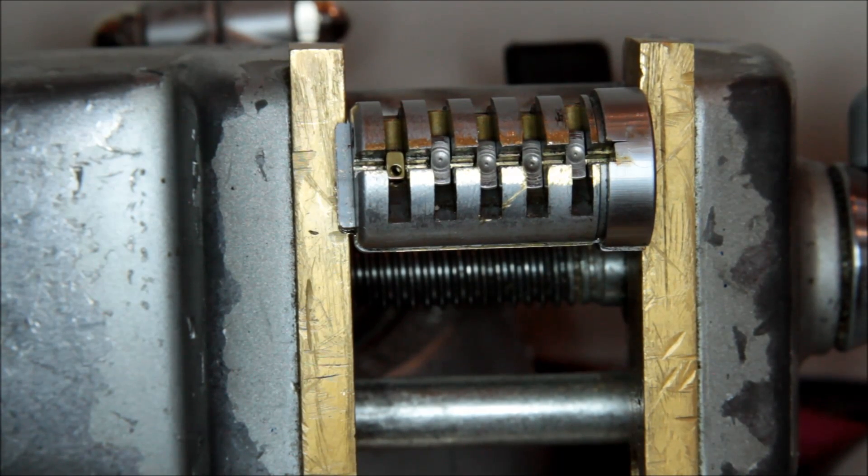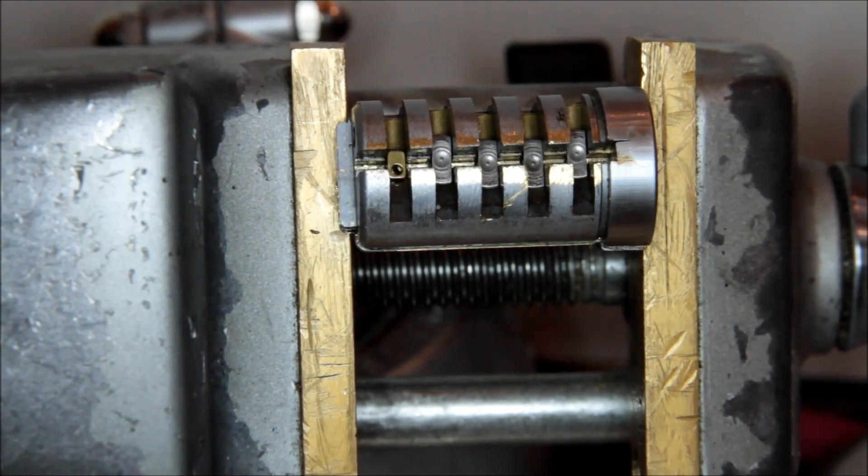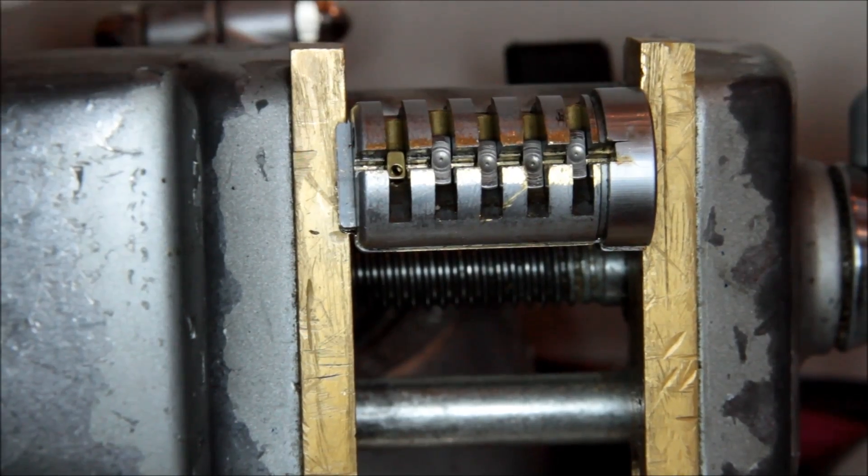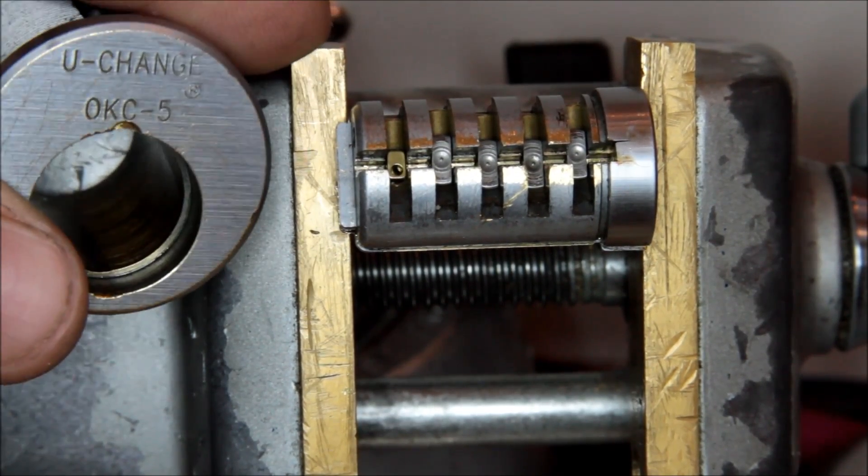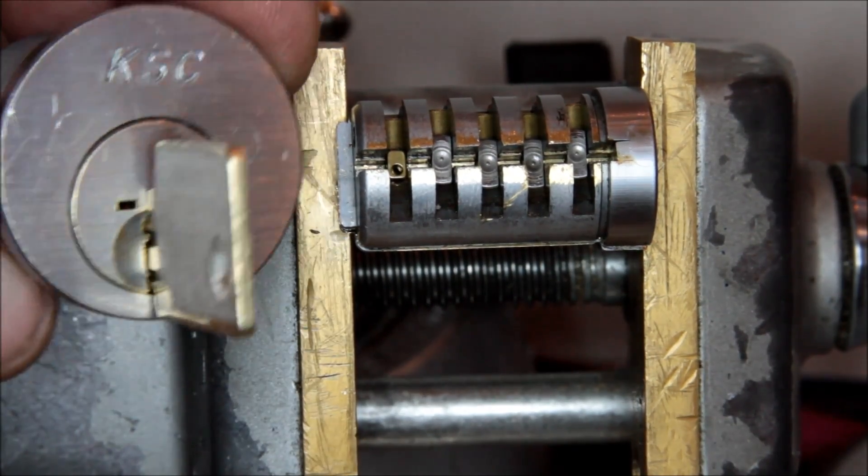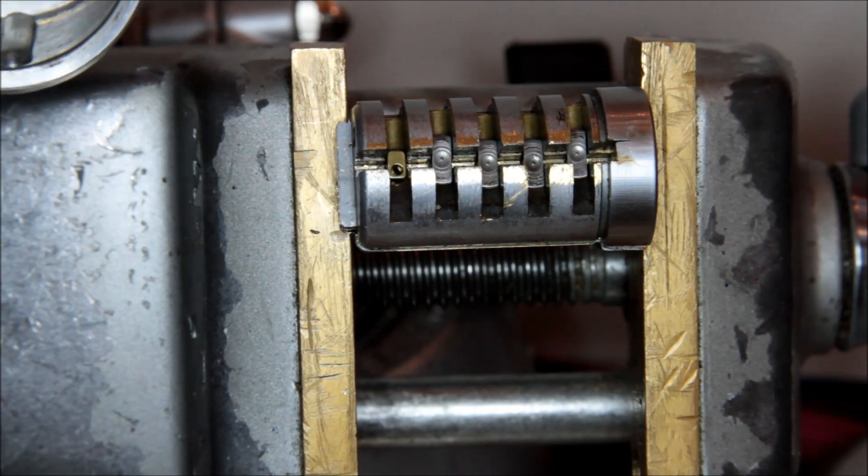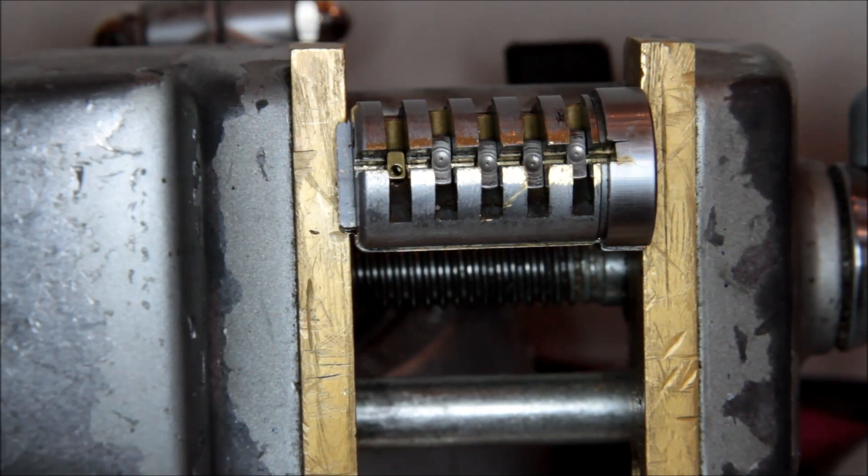But in the meanwhile, you're kind of screwed if you've got one of these. So there we go. So that's the U-Change lock. This is what a semi-legitimate one looks like. The other one that I had we did the picking video of was this KSC, which I don't know what that stands for, but some rebranding of it, but it's exactly the same on the inside.